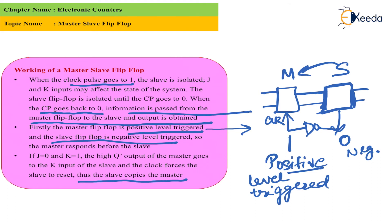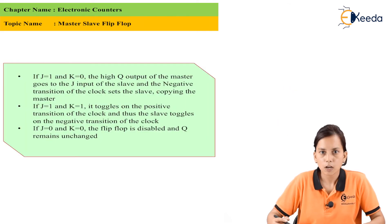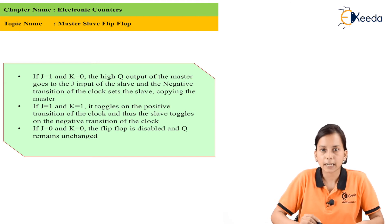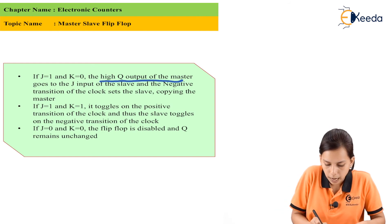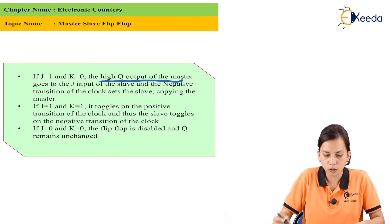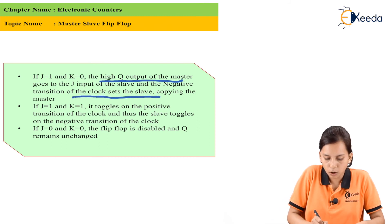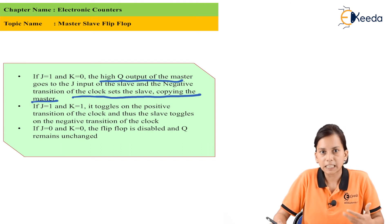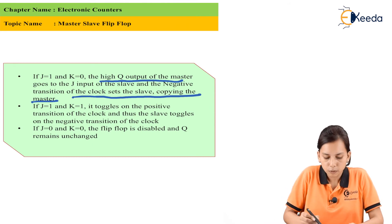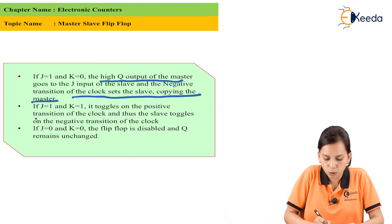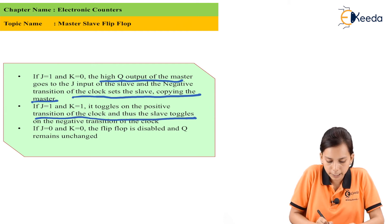We can prove there is no race-around condition. If J=1 and K=0, the output remains high. If J=1 and K=1, the master toggles on the positive transition of the clock, and thus the slave toggles on the negative transition of the clock.